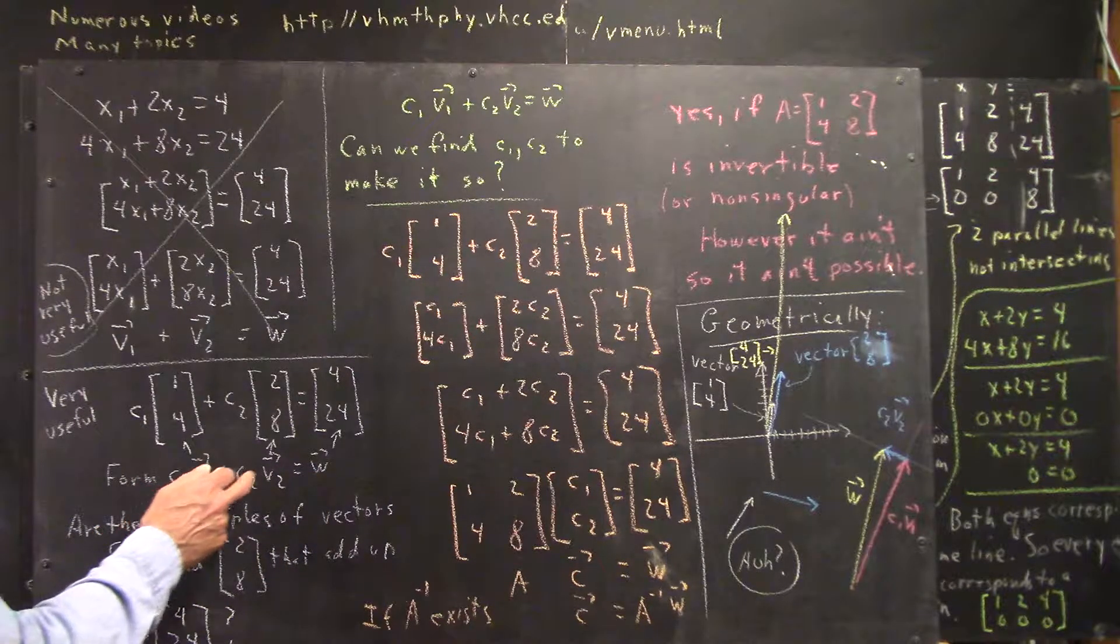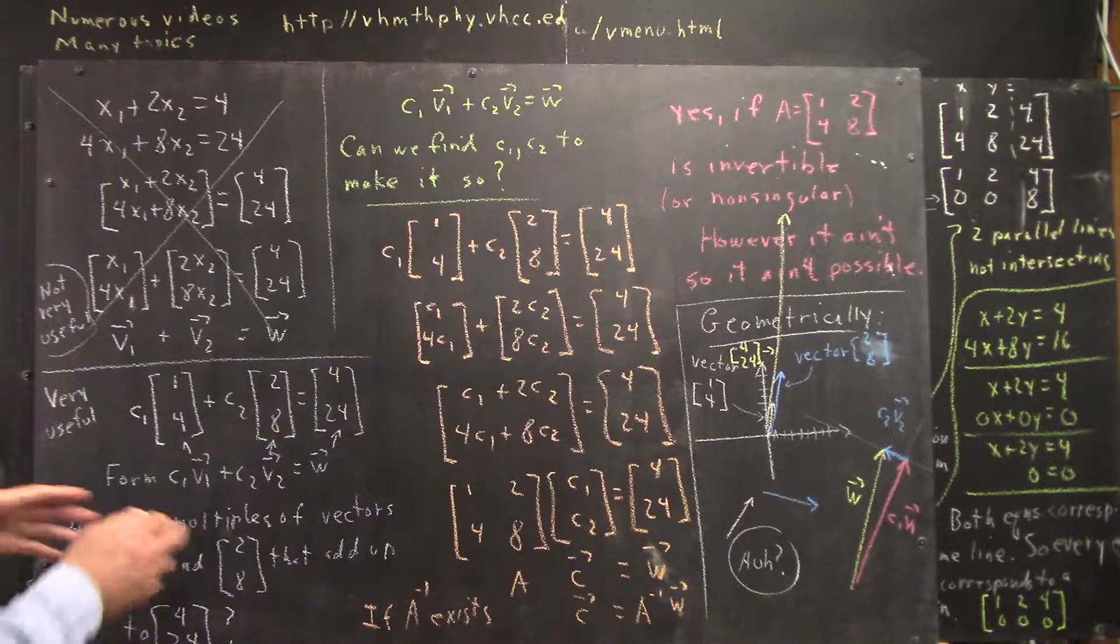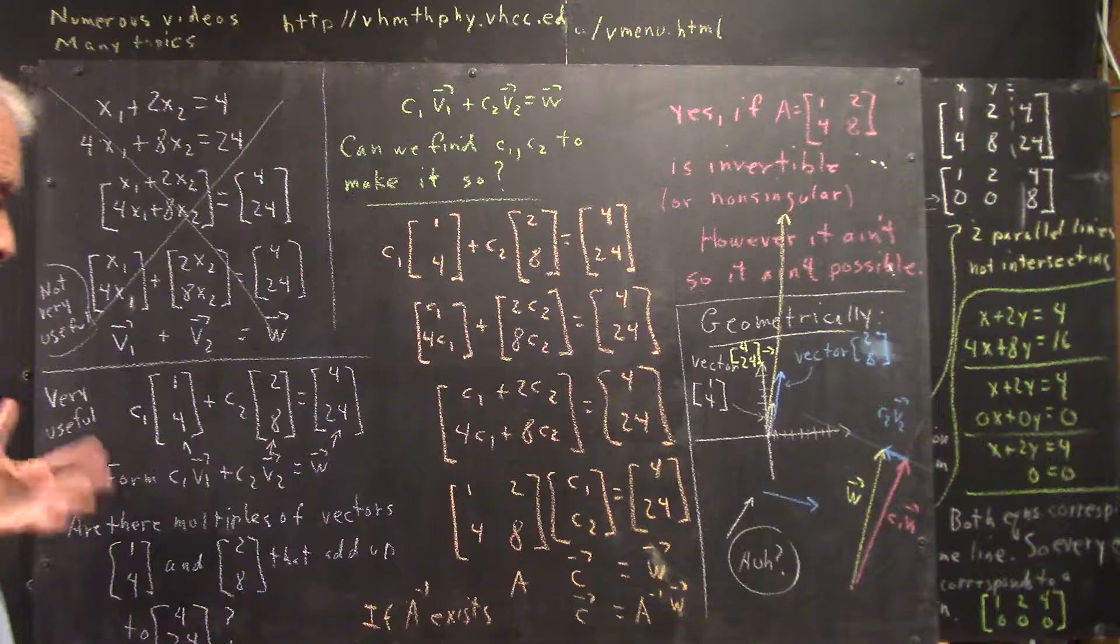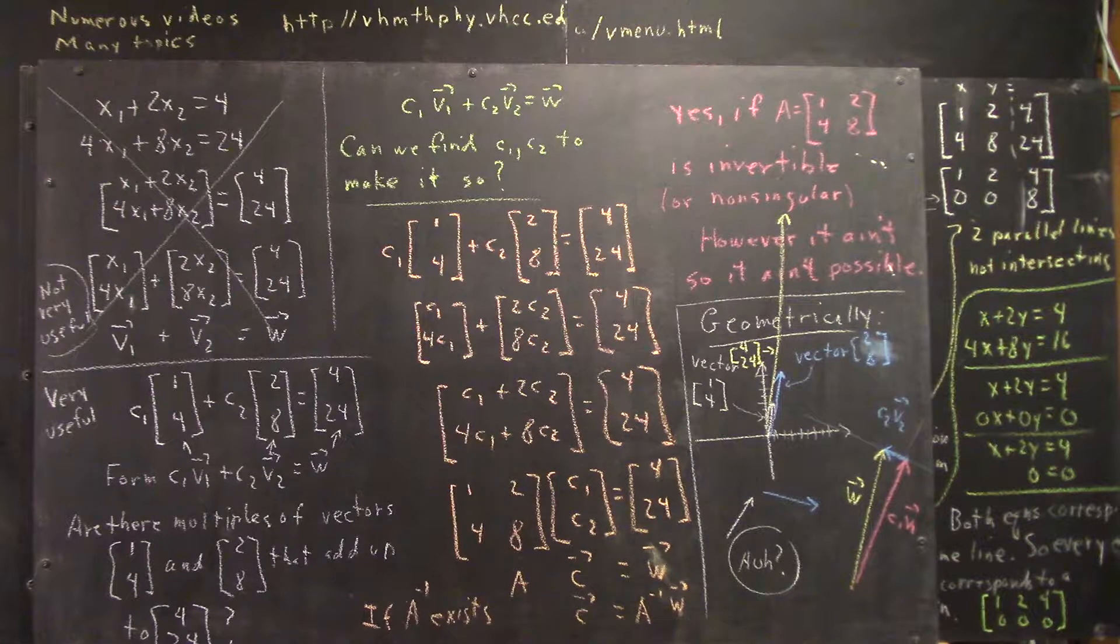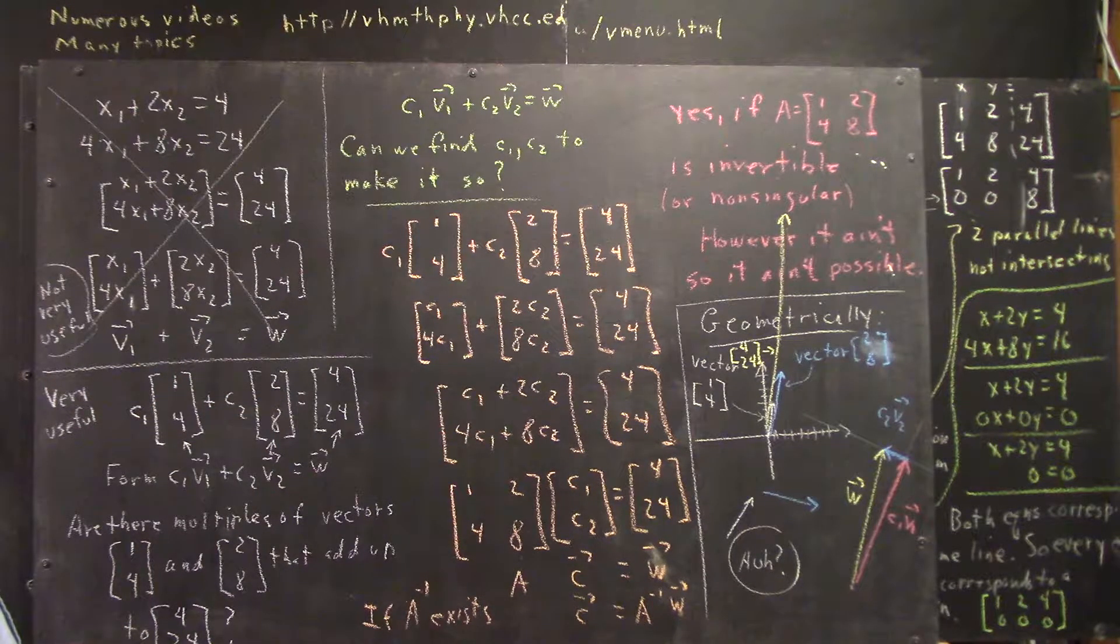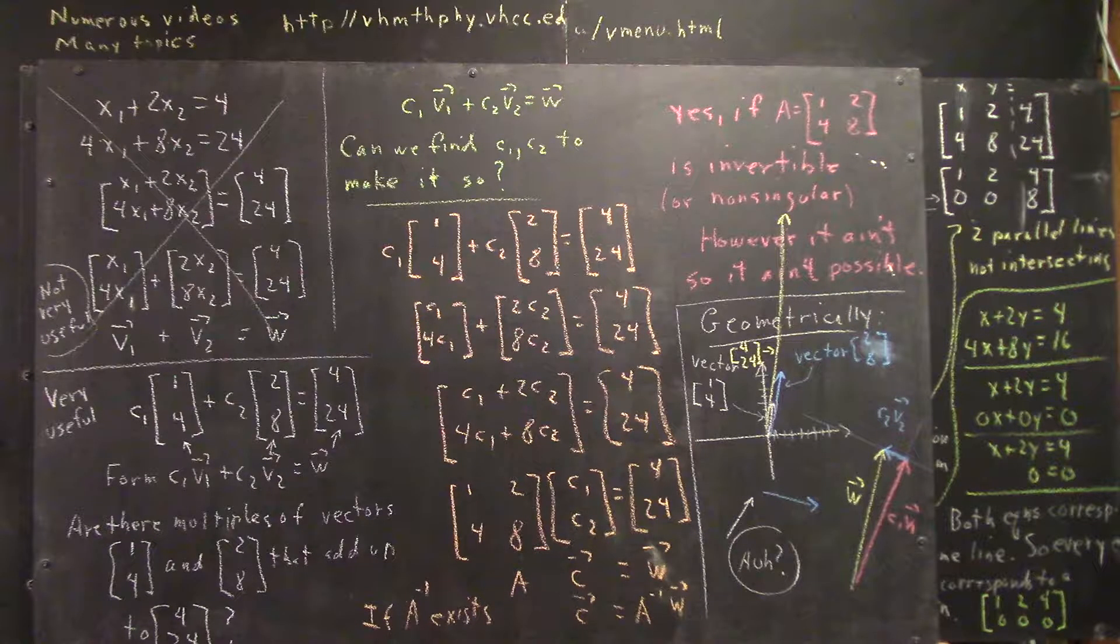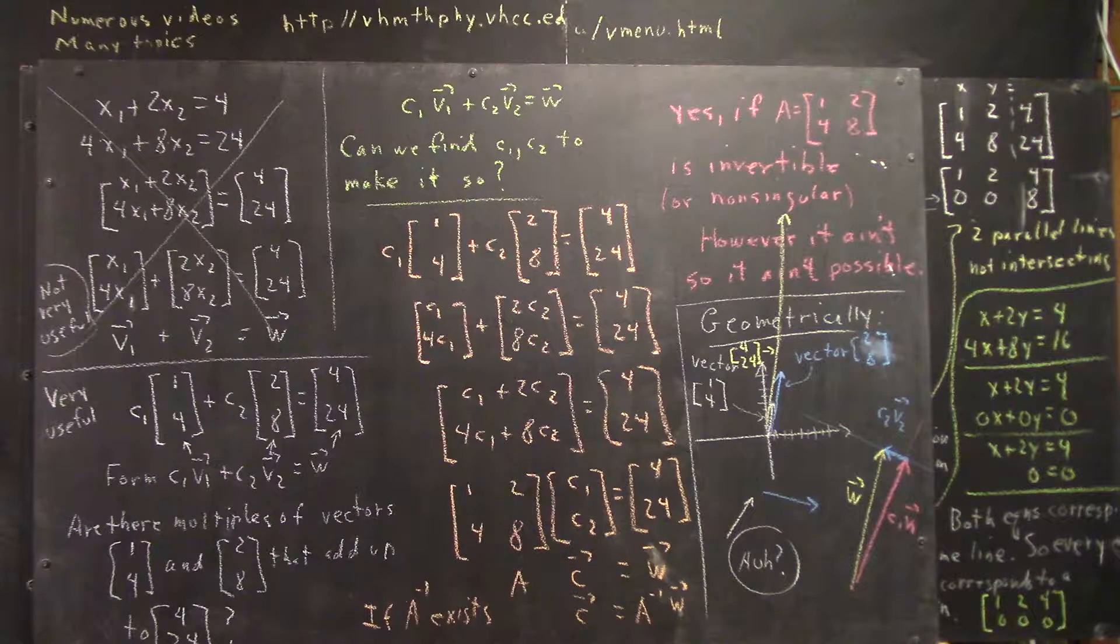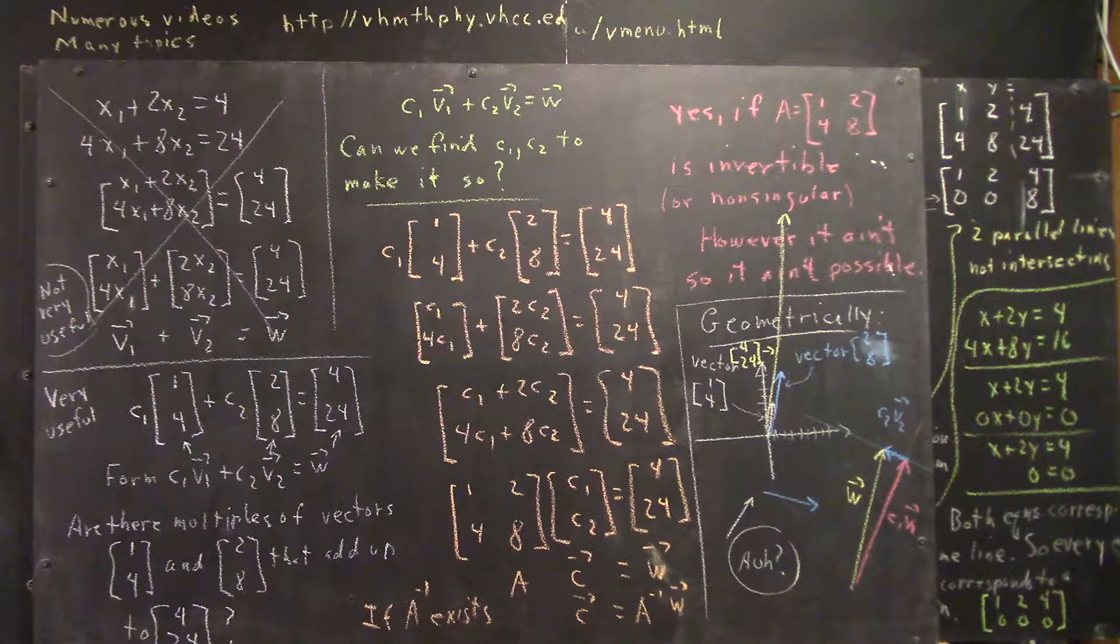This equation is of the form c1*v1 plus c2*v2 equals w, where v1 is regarded as a vector, v2 as a vector, and w as a vector. These vectors can be represented in two-dimensional form on a two-dimensional coordinate system. I kind of do that over here, but if you understand a little bit about vectors that's pretty obvious.